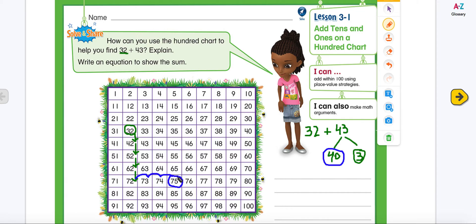So using my hundred chart, I started with the addend 32. First, I added 1, 2, 3, 4 tens. In order to add the tens, I move down the row. But if I have to add the ones, I move towards the right side. So over here, the numbers are increasing by 1. So 1, 2, 3. And my answer is number 75.